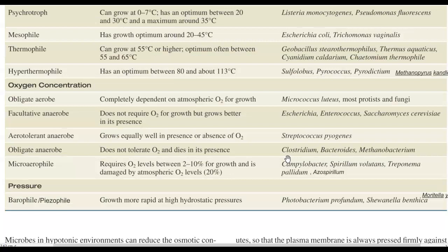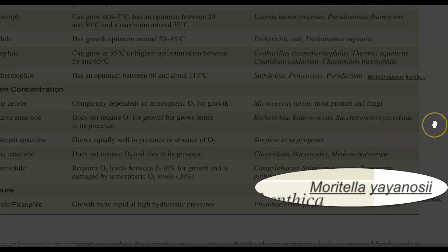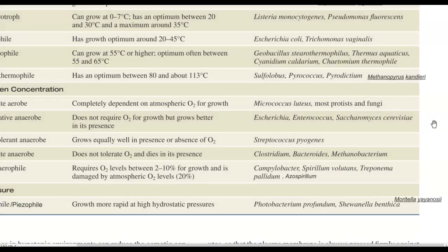The last classification is based on pressure — the amount of hydrostatic pressure an organism can survive in. These are called barophilic or piezophilic organisms. An example is Moritella yayanosii, a typical organism that grows under high hydrostatic pressure conditions.